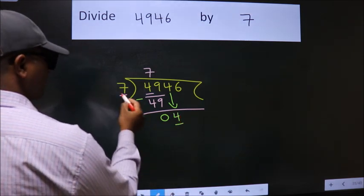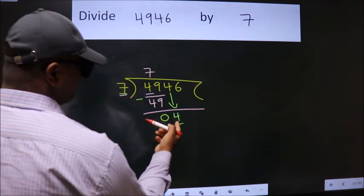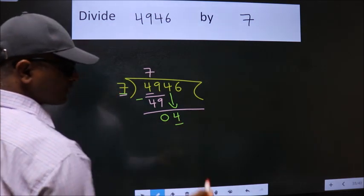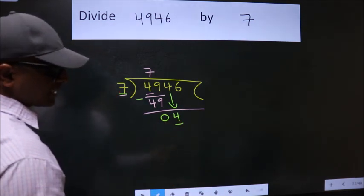Here we have 4. Here 7. 4 is smaller than 7, so we should bring down the second number.